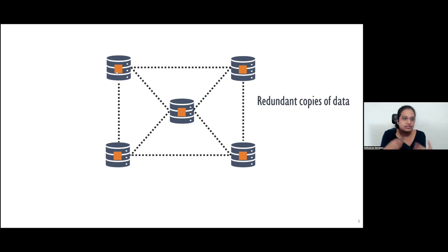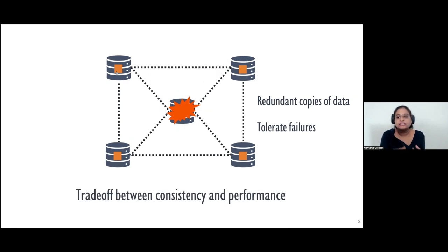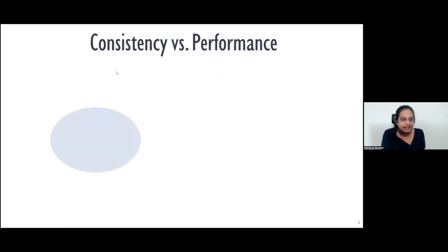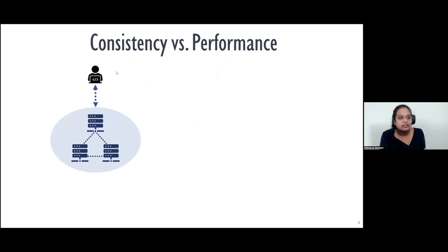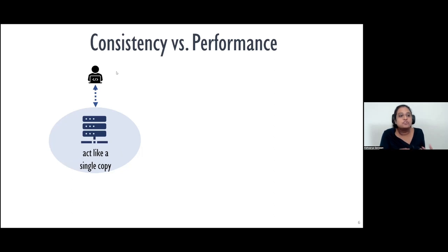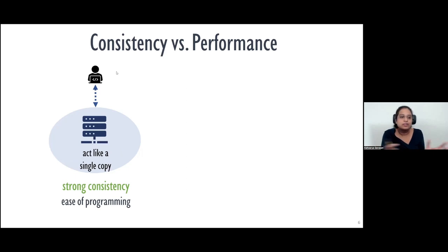This inherent mechanism of replicating data creates a tension between consistency and performance. Even when data is replicated across multiple servers, the ideal behavior we want is that the system acts like a single copy — providing the illusion that there is only one copy. This is what a strongly consistent system provides. It hides the fact that multiple copies exist, making it easier to reason about system behavior and easing programming. But unfortunately, these systems tend not to perform well.